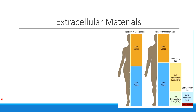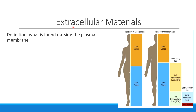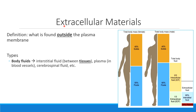Now I want to briefly look at what's outside of cells, to allow us to focus in future videos on the inside. Things that are outside of the plasma membrane we call extracellular — meaning on the outside of our cells. The first kind are fluids. One common type throughout your body is called interstitial fluid, found in between the cells and tissues. We also have plasma, found inside blood vessels, as well as cerebrospinal fluid and lymph. These fluids help us to dissolve things like nutrients or transport things.